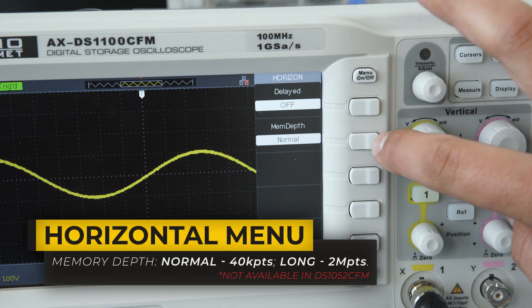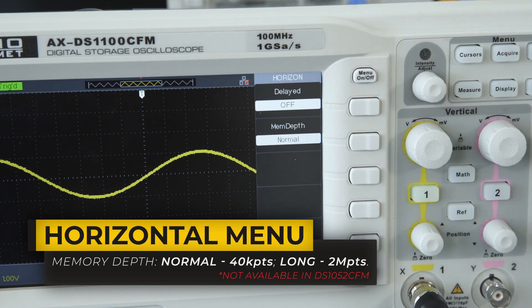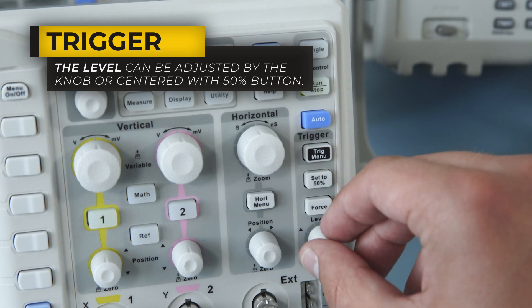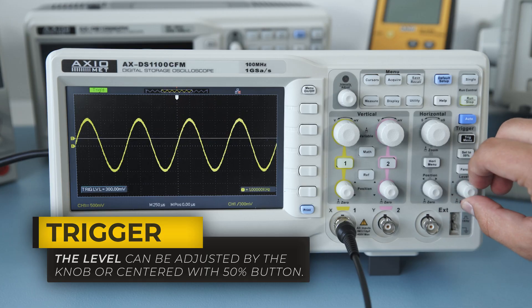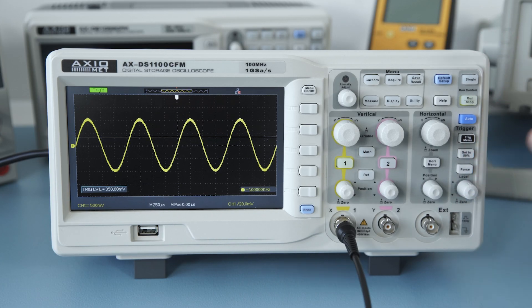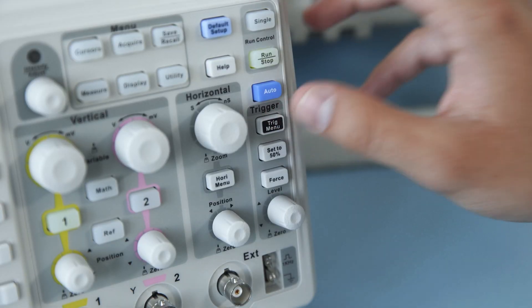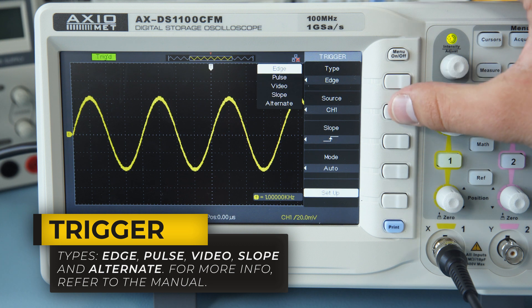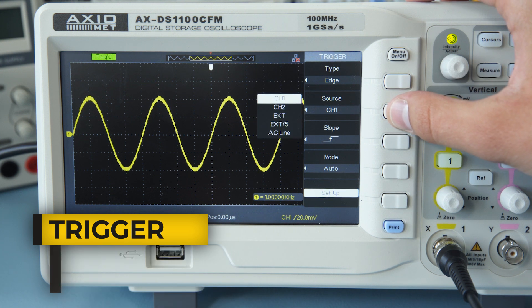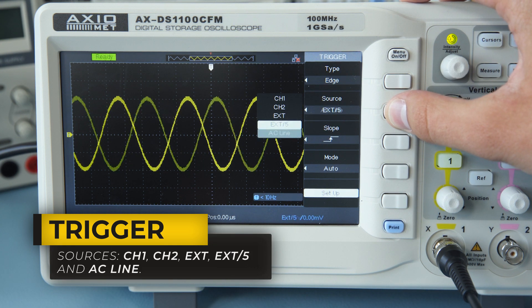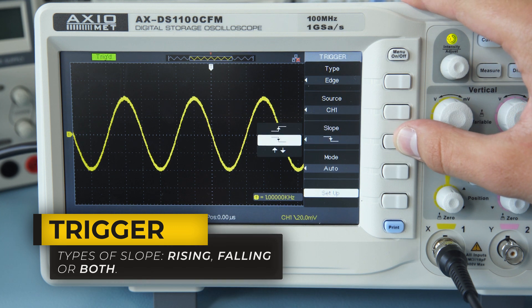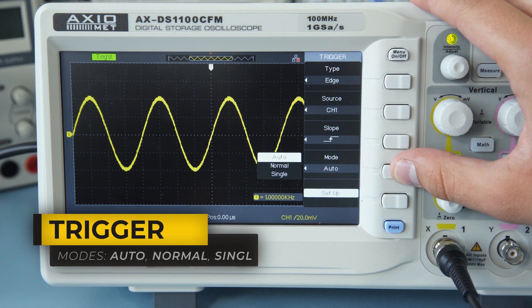In the horizontal menu, you can also choose between normal or long memory depth. The trigger level can be adjusted by the knob or can be quickly centered using the 50% button. In the trigger section, we can choose between five different trigger types. Each one of them has its own options. You can also change the sources, define the type of the slope, and change the triggered mode.